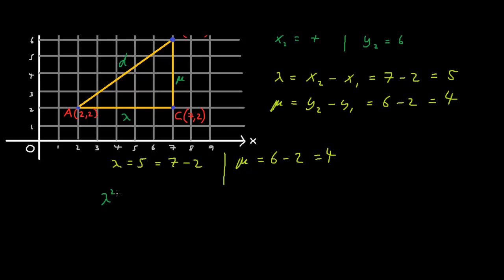Since lambda squared plus mu squared equals d squared and lambda equals x2 minus x1 and mu equals y2 minus y1.